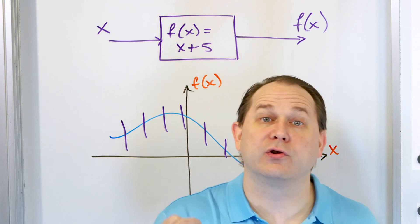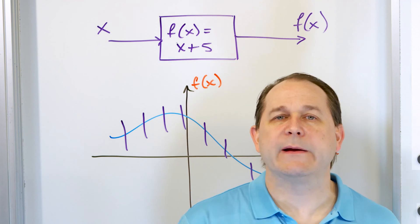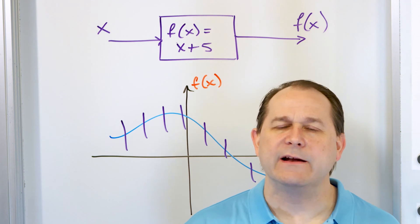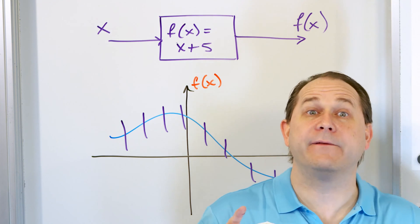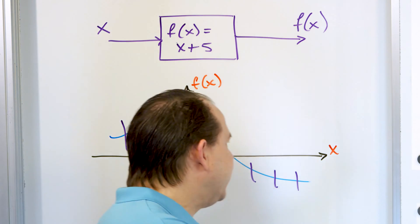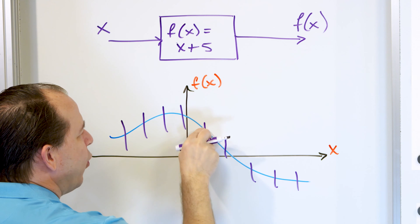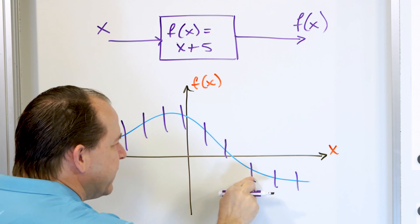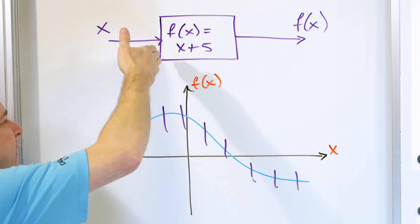But why does the vertical line test do anything? It's because the other very important characteristic of a function is that for a single input value x, you only get one and only one unique output value f of x — or y, whatever you want to think about it. It's a one-to-one representation. For every input value of x along the x-axis, I only get one value out. One value in, one value out. Because it's only one output for every input, it always crosses in one place.